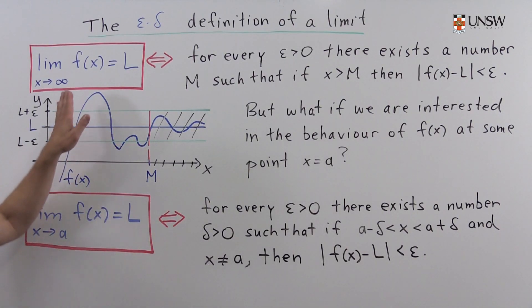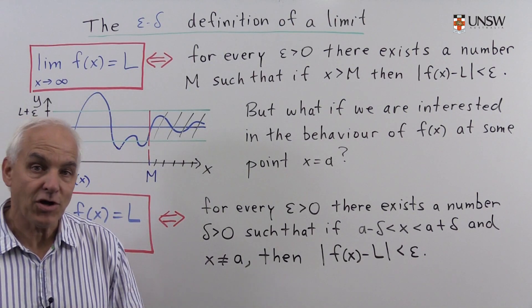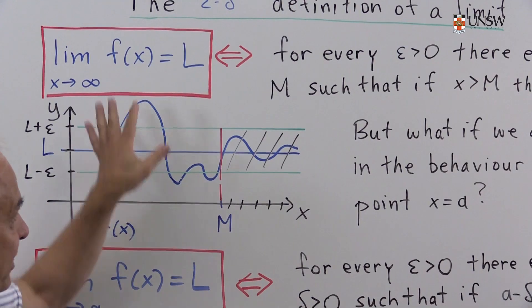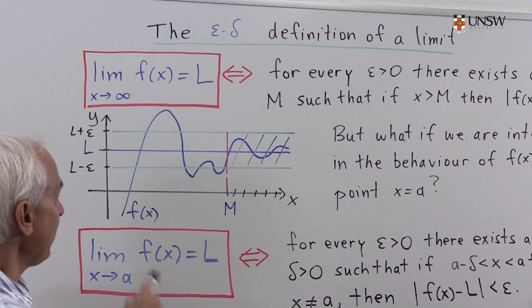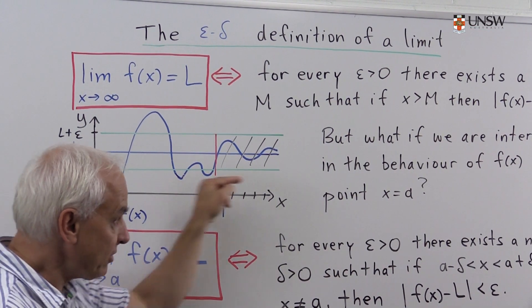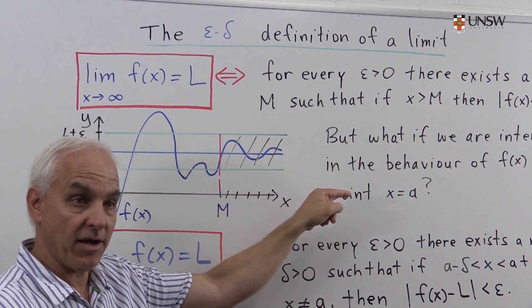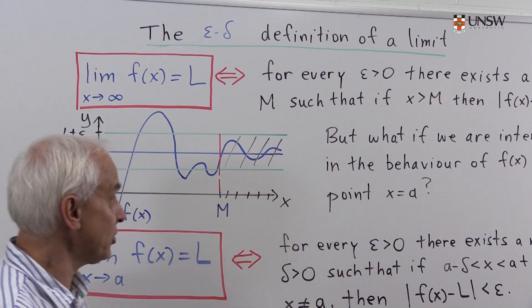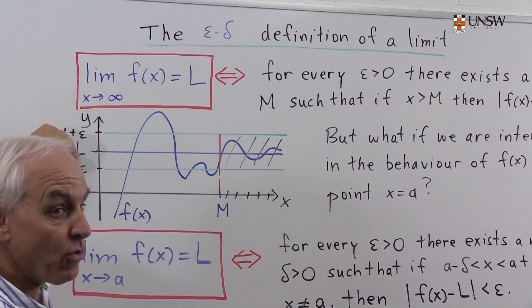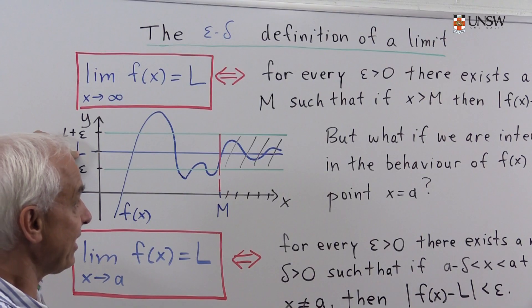We've seen this definition of the limit of a function as x approaches infinity, being a number L. We had a precise definition of what it means if we have a function like this, f of x, and we're interested in what happens to it as x approaches infinity, in other words as x gets large. Here we see that it's kind of oscillating towards this value L.